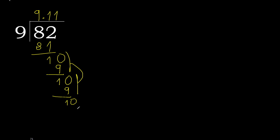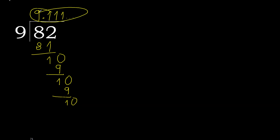The pattern repeats. Therefore it keeps repeating. 82 divided by 9 is — after the point, 1 repeating. The answer repeats.